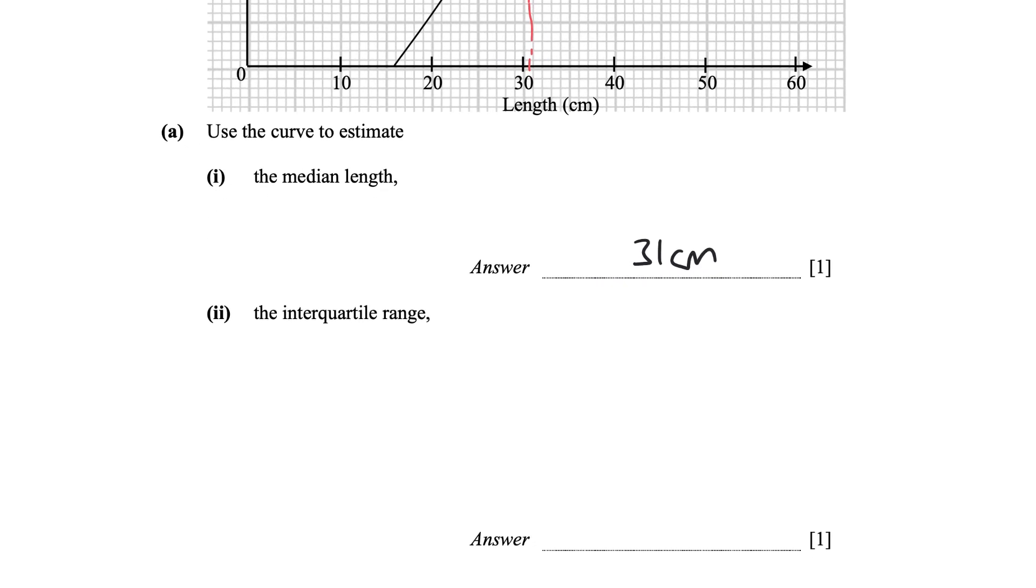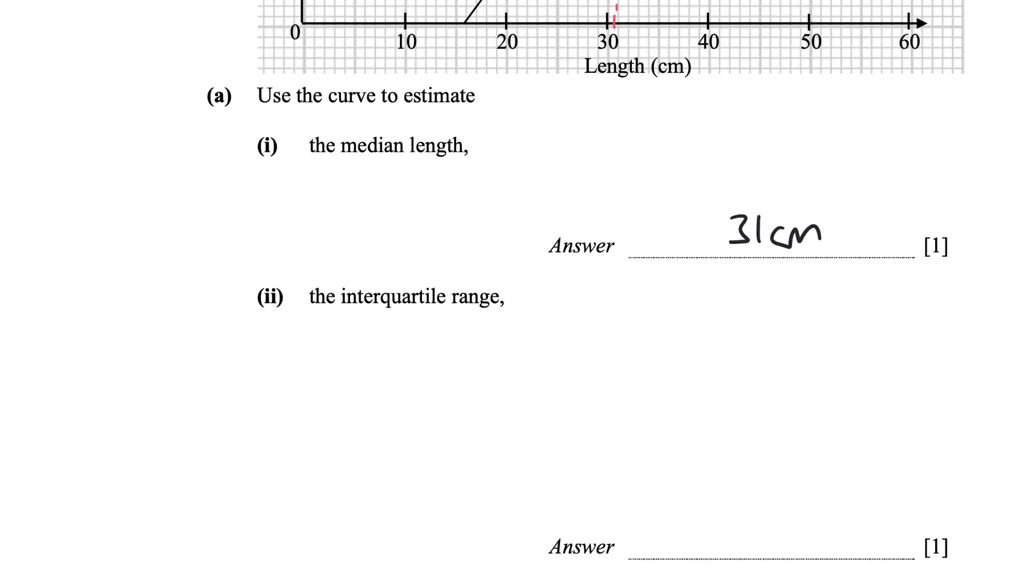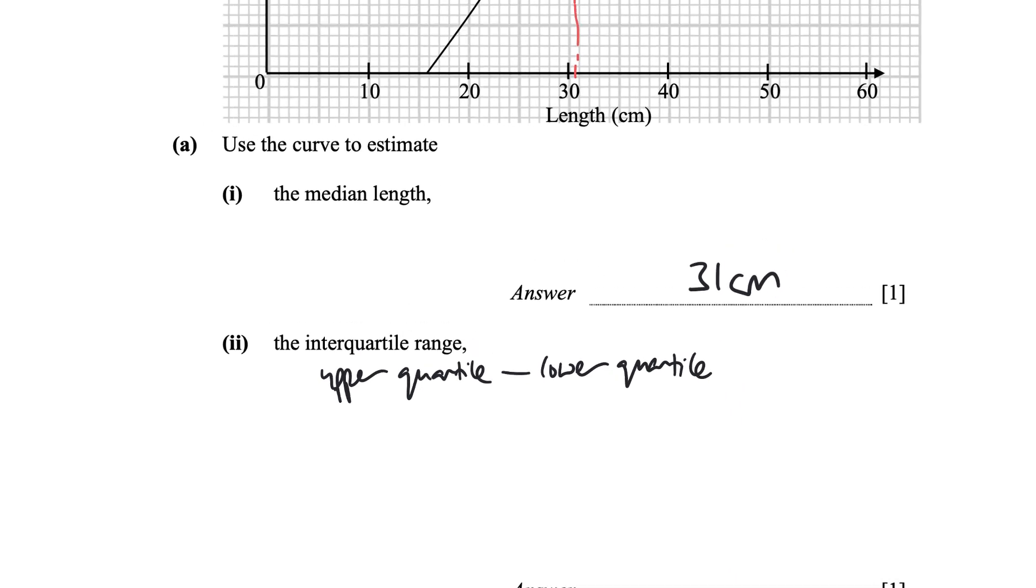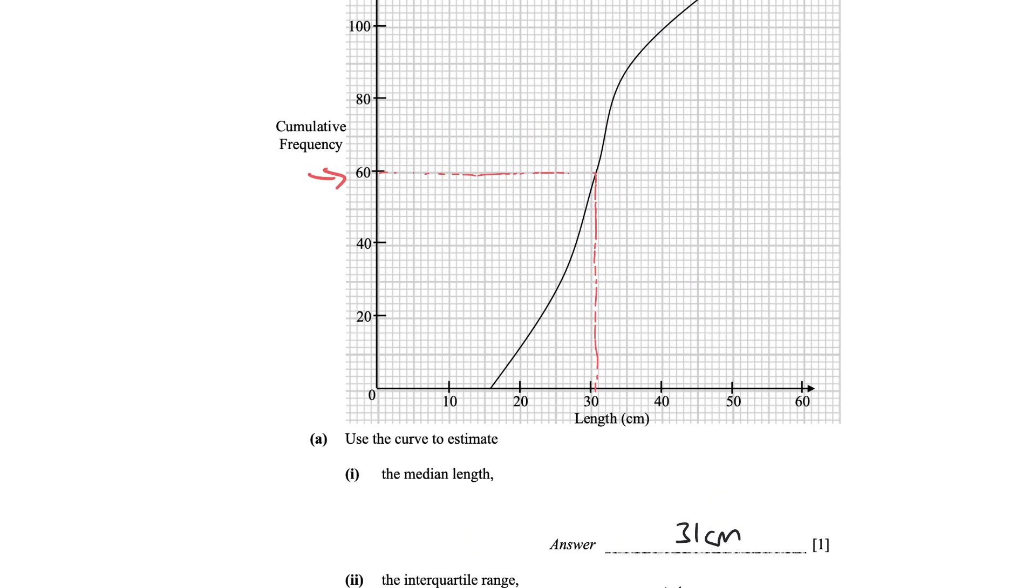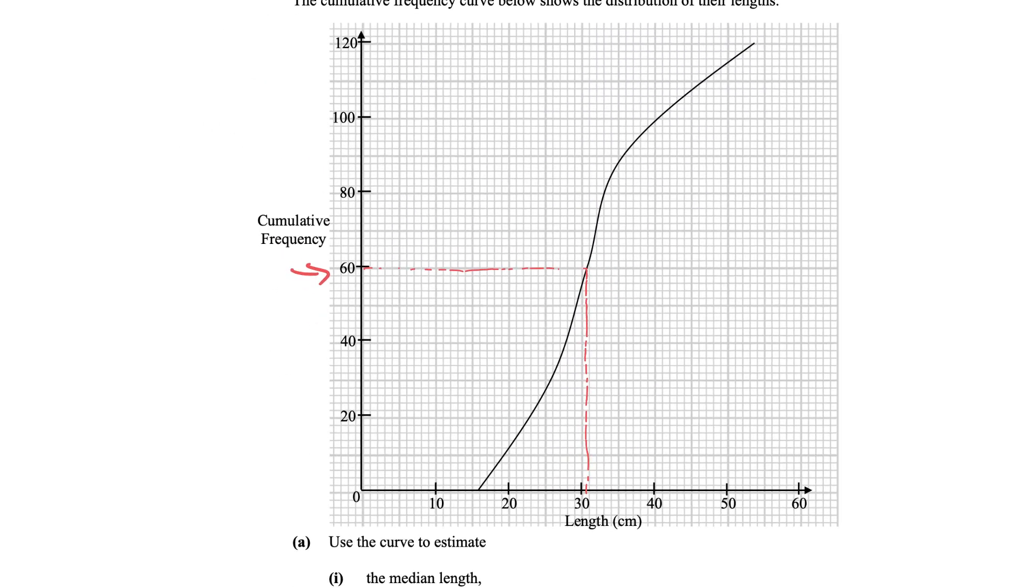Now we want to find the interquartile range, which is basically the upper quartile subtracting the lower quartile. Upper quartile subtract the lower quartile. Right now we want to find our upper quartiles and our lower quartiles.